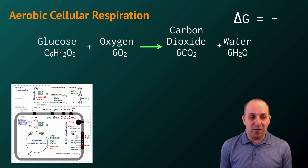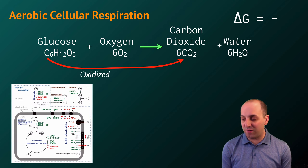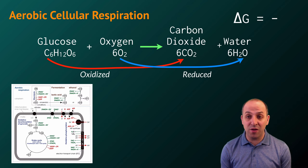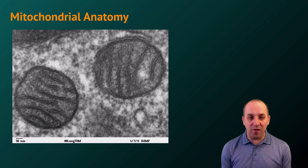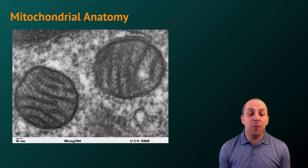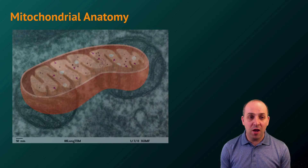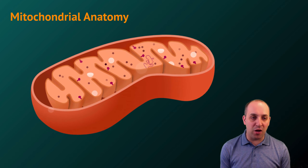Looking at oxidation and reduction in this reaction, we can see that the carbon in glucose is what is oxidized, and the oxygen that we breathe in is what is reduced. You don't have to be a eukaryotic organism to carry out aerobic cellular respiration, but we're going to focus on eukaryotes because in eukaryotes it happens in the mitochondria. In order to understand how this works, we need to have some understanding of the anatomy of a mitochondrion.